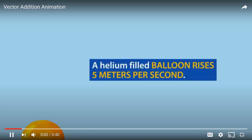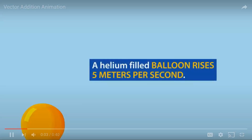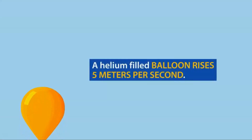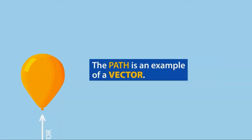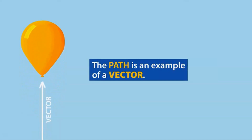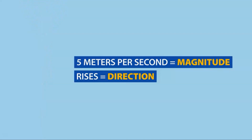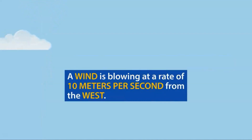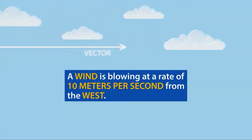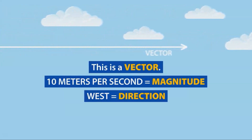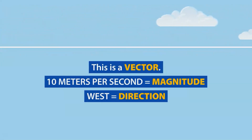A helium-filled balloon rises up at a rate of 5 meters per second. The path the balloon takes is an example of a vector because there is both magnitude and a direction given. A wind is blowing at a rate of 10 meters per second from the west. This is also a vector because a magnitude and a direction are given.